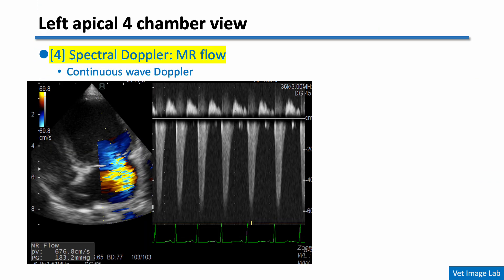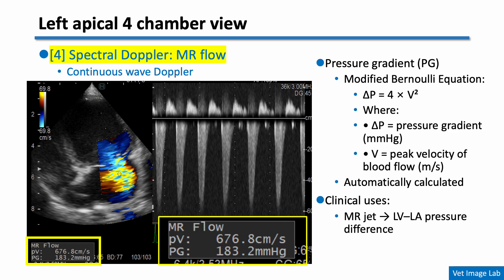We then use continuous wave Doppler to evaluate the mitral regurgitation jet. When we measure the peak velocity of the regurgitant flow throughout systole, we can estimate the pressure gradient between the left ventricle and the left atrium. In this case, the peak velocity of the mitral regurgitation jet is 6.76 m/s, giving a pressure gradient of 183 mmHg. This means the systolic pressure in the left ventricle is 183 mmHg higher than in the left atrium, so we can estimate the pressure difference using the velocity of the regurgitant jet.